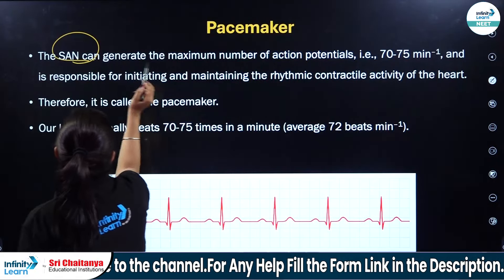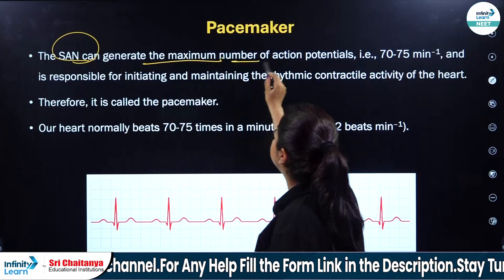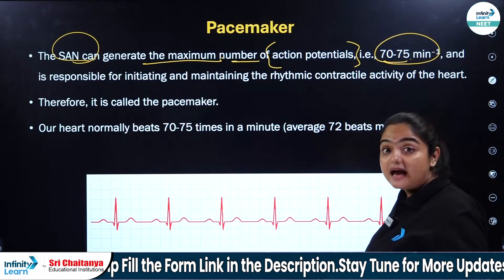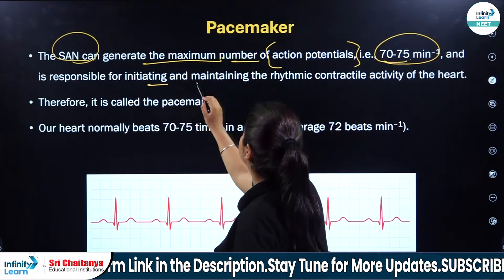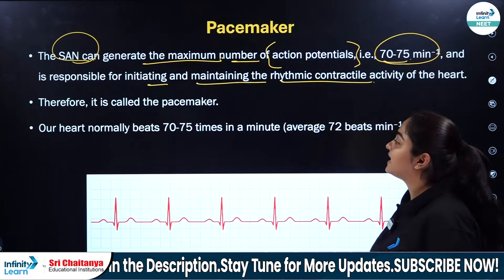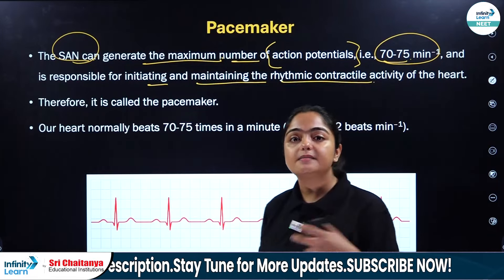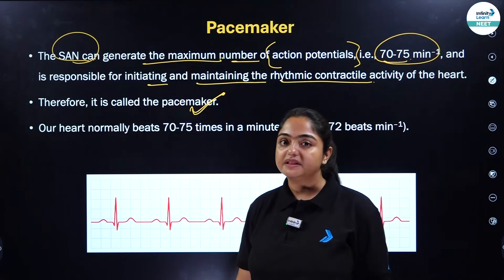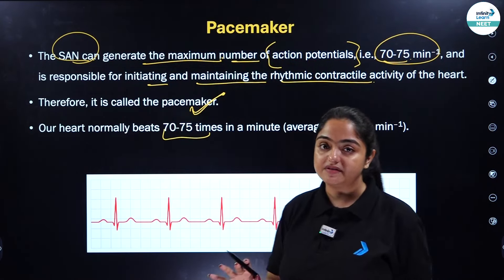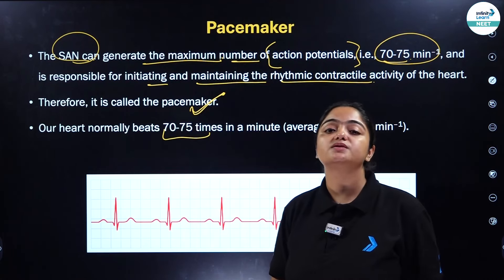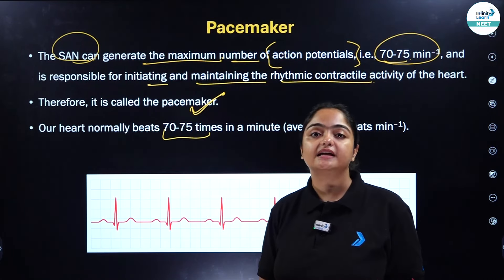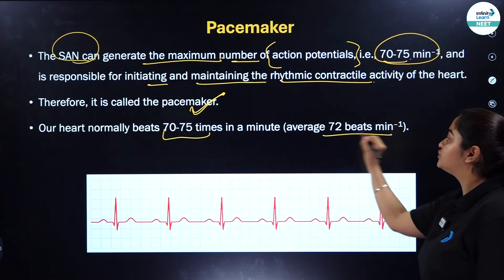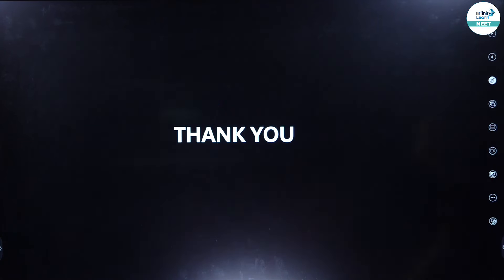The SA node generates the maximum number of action potentials — 70 to 75 per minute — and that is why it becomes responsible for initiating and maintaining the rhythmic contractile activity of the heart. That is why we call the SA node the pacemaker. Our heart normally beats 70 to 75 times per minute, and the SA node is responsible for maintaining this rhythmic activity of the cardiac cycle. Hence, we call it the pacemaker. The average is 72 beats per minute.